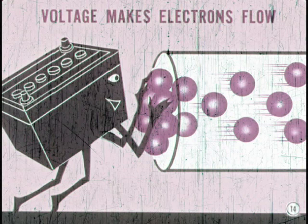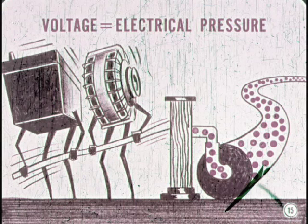Voltage, or electrical pressure, makes the electrons in a conductor move to produce current flow and work. In an automobile, the battery, alternator, or generator supplies the necessary voltage. Now, here's a point to remember. A battery or alternator doesn't create electricity any more than a water pump creates water. They simply produce voltage, which is the common name for electrical pressure.